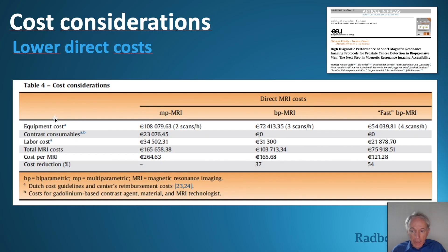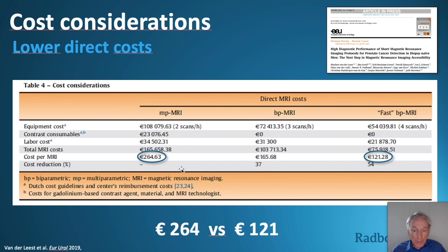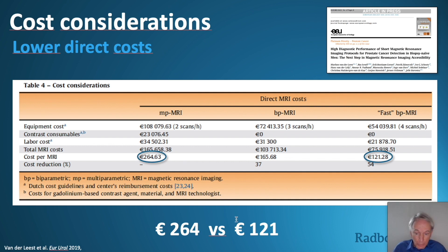A few words about costs. Comparing the direct costs of fast MRI, bi-parametric MRI, and multi-parametric MRI: in the Netherlands, fast MRI costs 121 euros versus 264 euros for multi-parametric MRI — more than twofold. So it is quite cost effective.